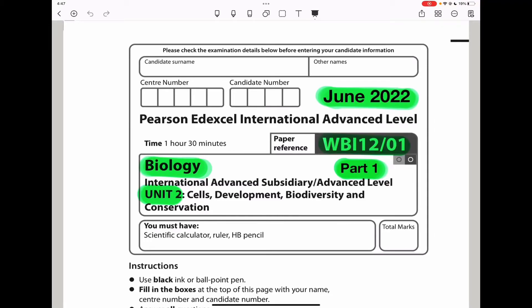Welcome to the Chemistry, Biology, and Math Revision Hub. Today we are doing the Pearson Excel International A-Level Biology Unit 2 for June 2022. This is the part 1 video. I will put the link to the second part video in the description box below.